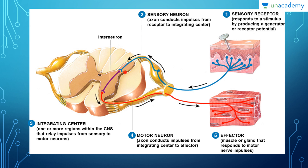Then we have the interneuron, which delivers the message from the sensory to the motor part. The integrating center consists of one or more regions within the CNS that relay impulses from the sensory to the motor neurons, as represented by the interneuron. The motor neuron axon then conducts the impulse from the integrating center to the effector — the muscle or gland that responds to the motor nerve impulse — and you lift your foot away. That covers the reflex arc.